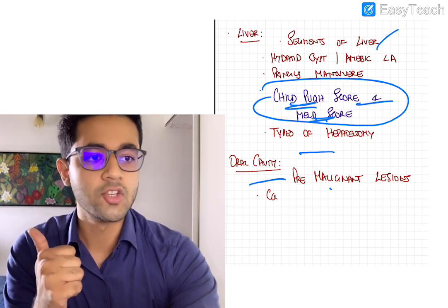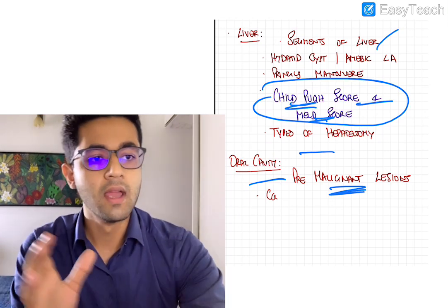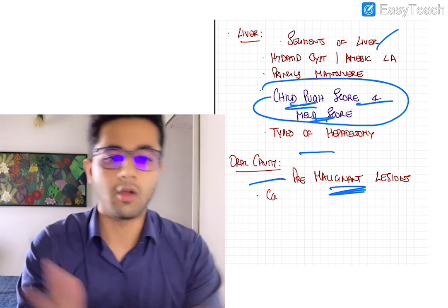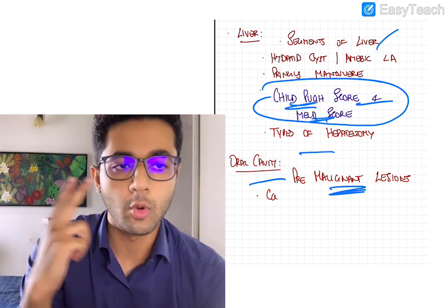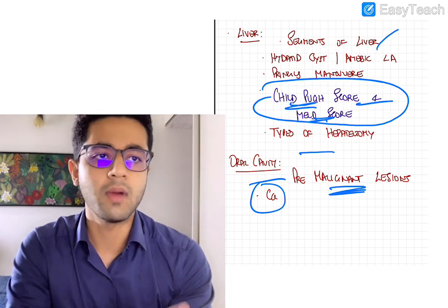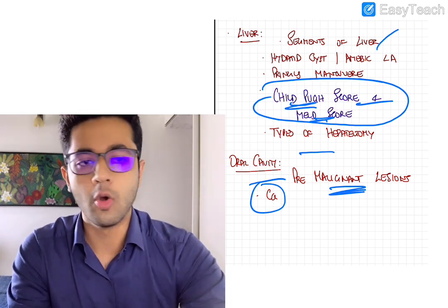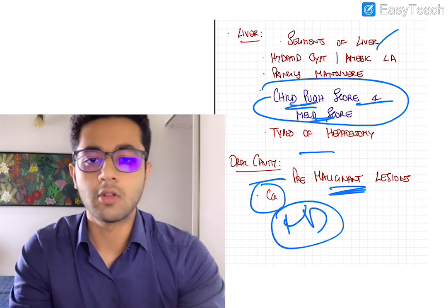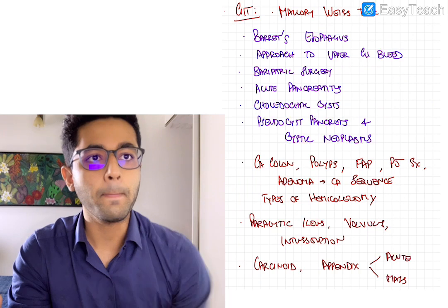In oral cavity, premalignant lesions of the oral cavity is the only really, really important thing. So under this, you should know about leukoplakia, erythroplakia and submucous fibrosis. Of course, there are many more. But these three, you should know in some detail. Carcinoma, buccal carcinoma and tongue carcinoma are also fairly important. So good to know. With them, also have a look at neck dissections. So when you read this, also read about neck dissection.